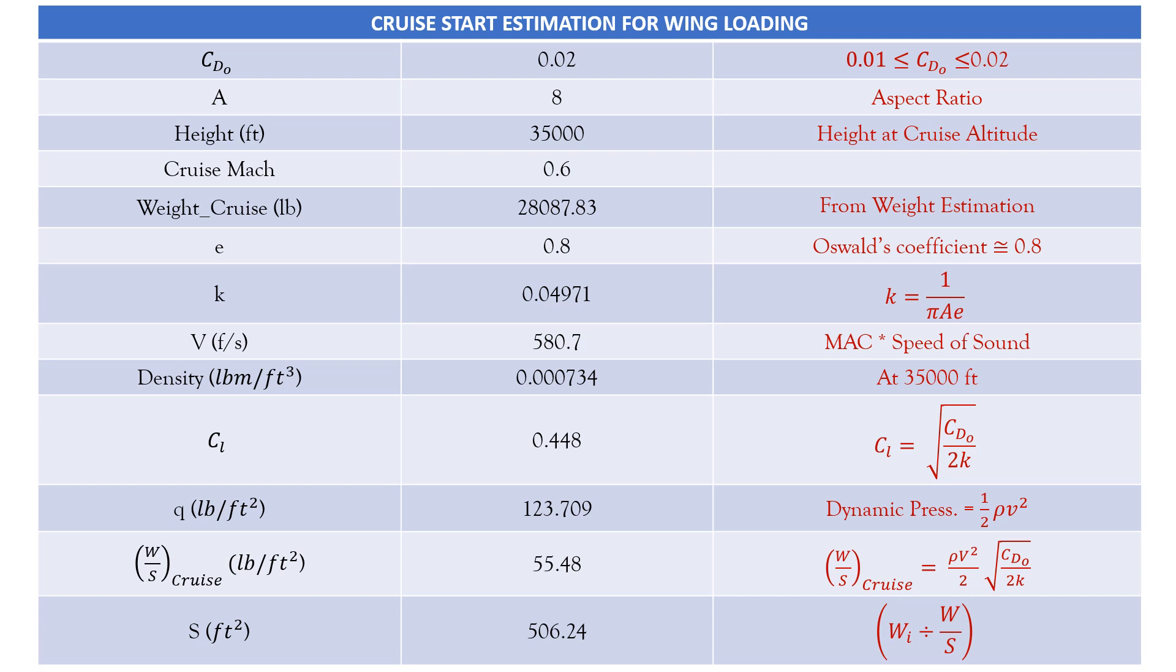Now the height is the cruise height, cruise altitude, which we have considered during our weight estimation. And again, the weight estimation finalized where the surplus was zero, with respect to that, the cruise weight has been selected. Here we have 28,087.83. Then we have a small parameter E, which is also known as Oswald's coefficient, that is approximately equals to 0.8.